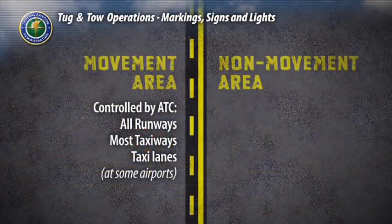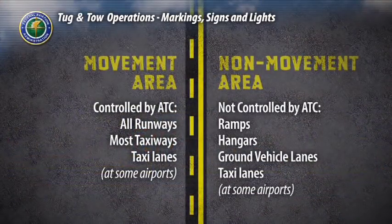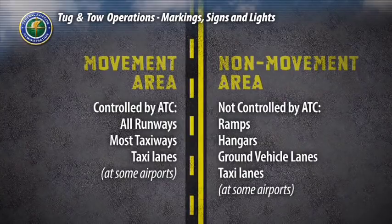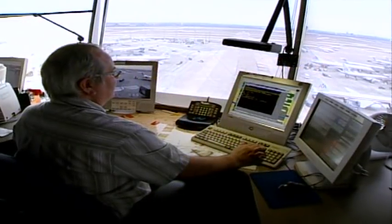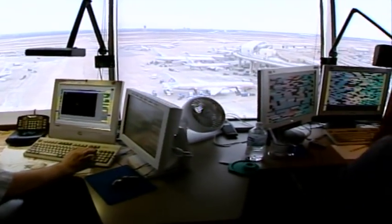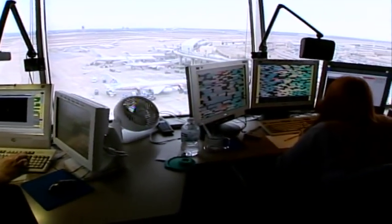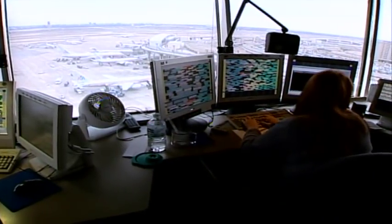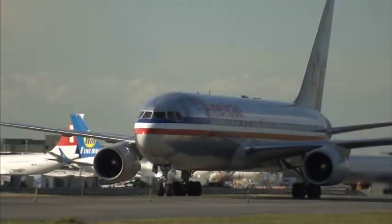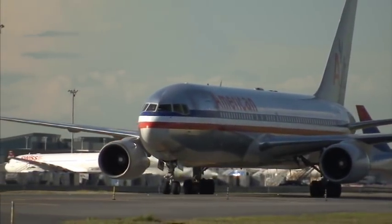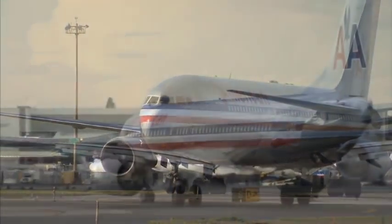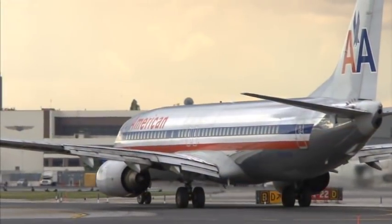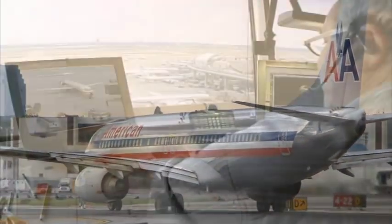Non-movement areas such as ramps, hangars, ground vehicle lanes, and taxi lanes at some airports are not controlled by air traffic control. Taxi lanes are like secondary streets — they provide a path for aircraft from a ramp to a taxiway. Taxi lanes may be considered movement or non-movement areas depending on their configuration at individual airports.